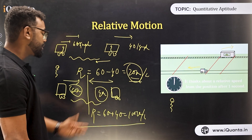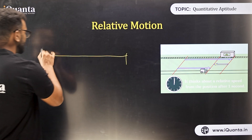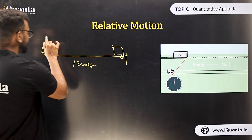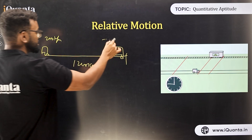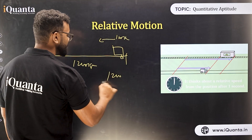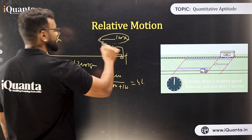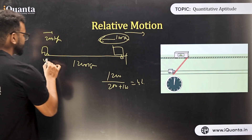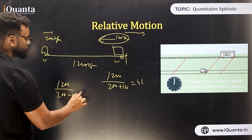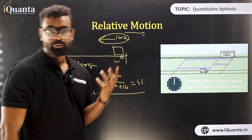For a common example: two objects are 1200 km apart, one moving at 200 kmph and the other at 100 kmph. If moving towards each other, they meet after 1200 divided by (200 + 100) = 4 hours. If moving in the same direction, the faster one catches the slower after 1200 divided by (200 - 100) = 12 hours.